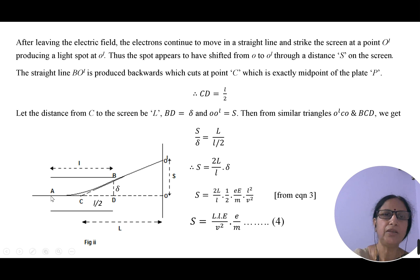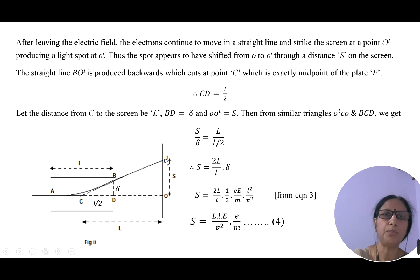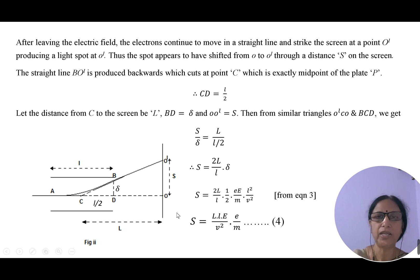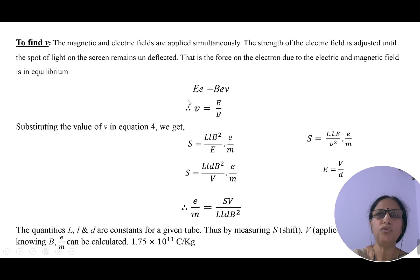To clarify: if the magnetic field alone is applied, the beam shifts downward; if the electric field alone is applied, the beam shifts upward. The effects are opposite to each other. If we apply both the electric field and magnetic field simultaneously in the appropriate fashion, the electron beam can be made undeflected. This happens when the two forces are in equilibrium — the force due to the electric field equals the force due to the magnetic field.